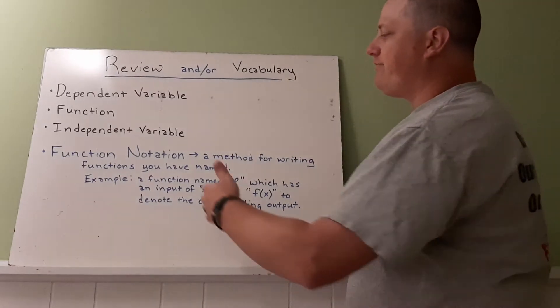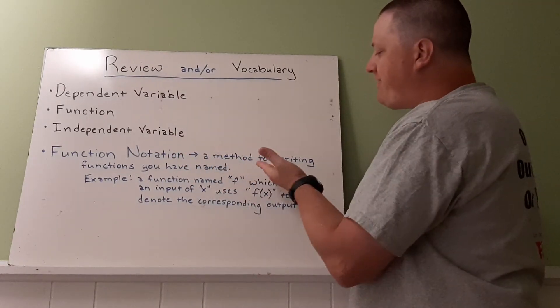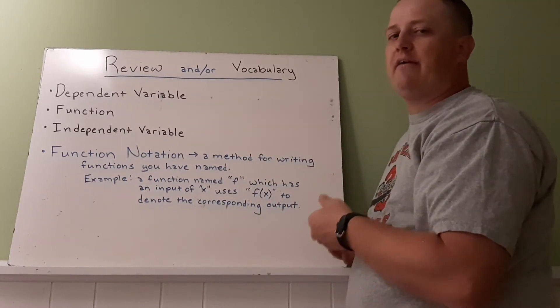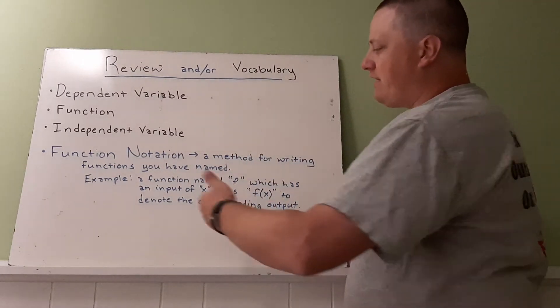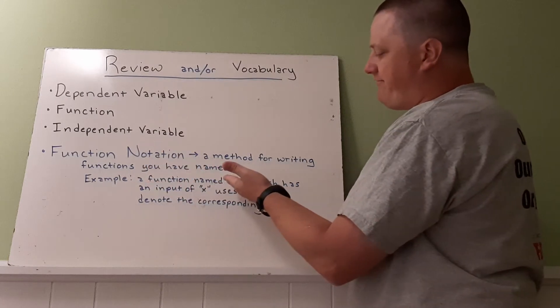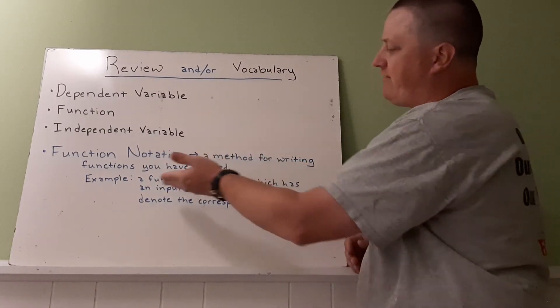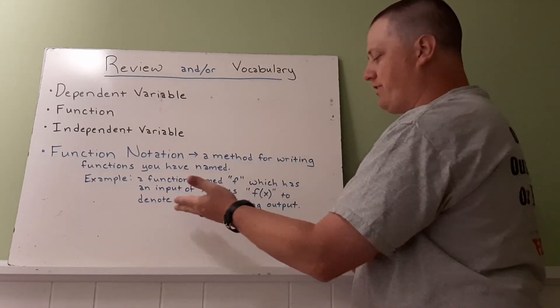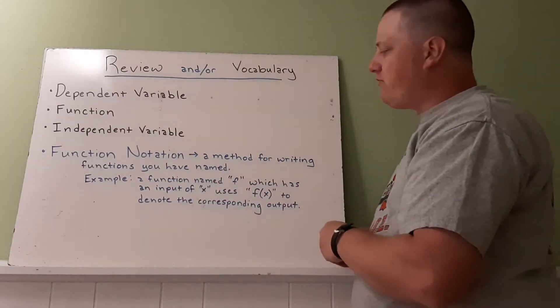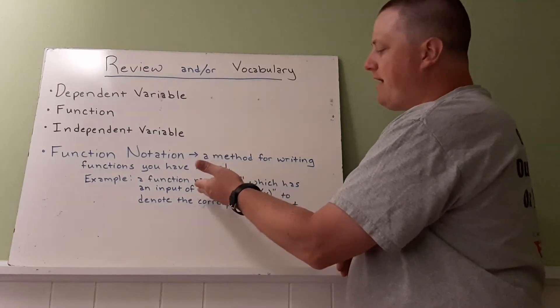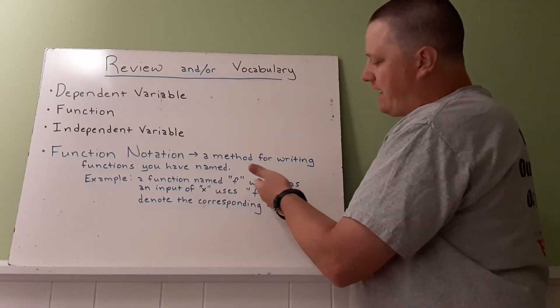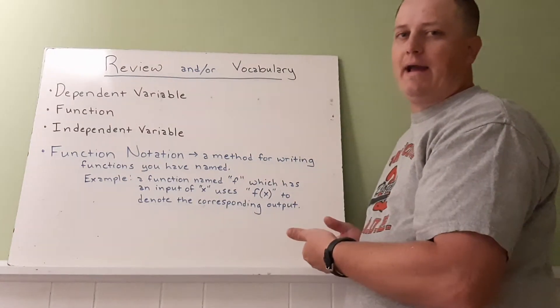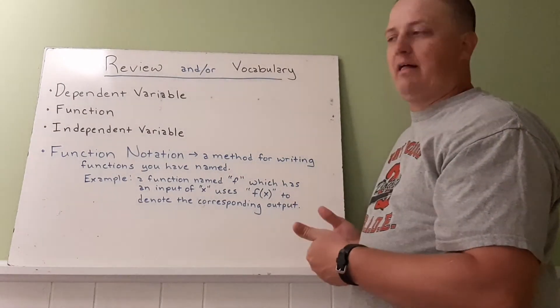And then our new one is function notation, a method for writing functions you have named. So what we're going to do is we're going to give the function a name, such as in this case we named a function f, which has an input of x and uses f(x) to denote the corresponding output. So what we do is we use the name and the input to create a new version of the output instead of using the letter y. And I'll explain why we do that during class.